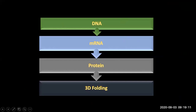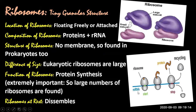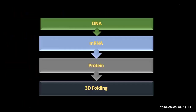This message goes to ribosomes, which read it. According to the message, transfer RNA brings amino acids, forming a chain called protein. That is basically a polypeptide chain, which has to be folded yet — three-dimensionally folded — and it becomes a protein.